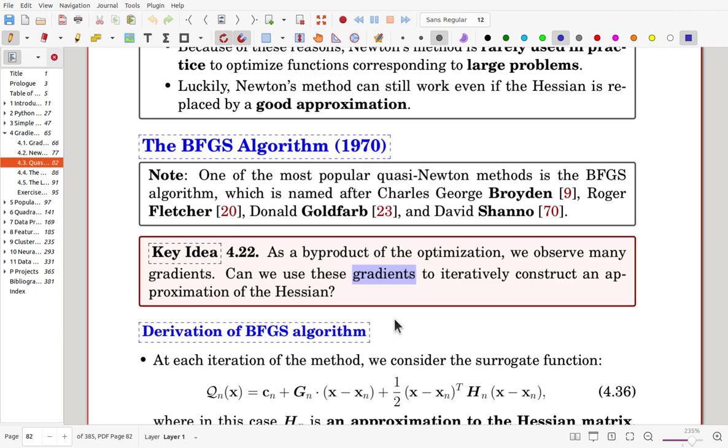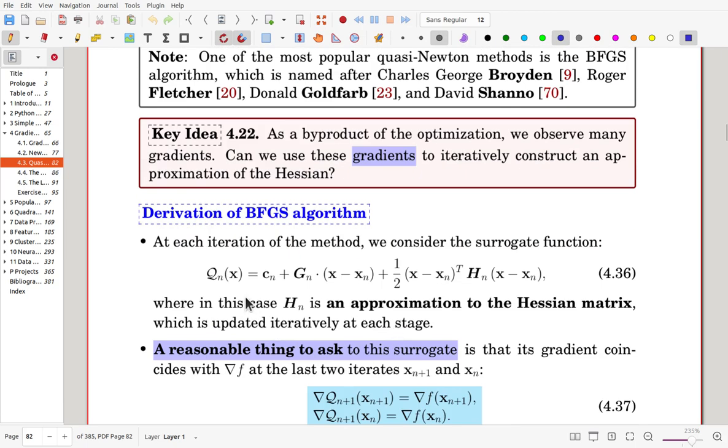Here we have the derivation of the BFGS algorithm. As for gradient descent method and Newton method, we start with a surrogate function. Here, Qn of x is now given in this form with Hn. In Newton's method, Hn is Hessian. Now we try to approximate the Hessian. So it is an approximation of a Hessian matrix.